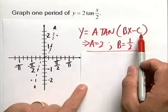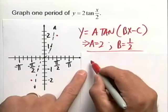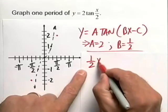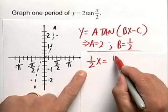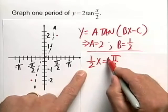Now since c is equal to 0 and b is equal to 1 half, we can simply write this as 1 half x being equal to pi halves. And I'm going to sneak in a plus or minus here.